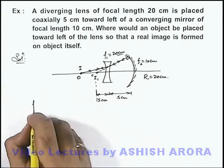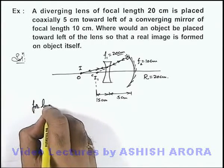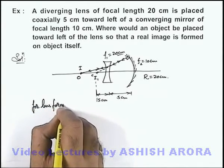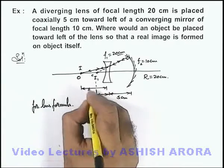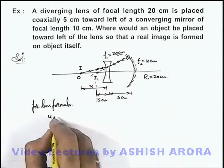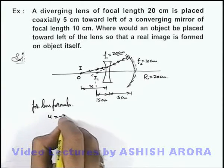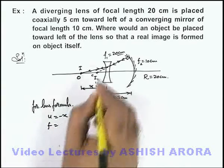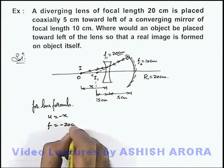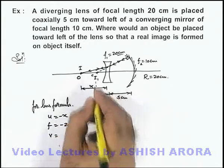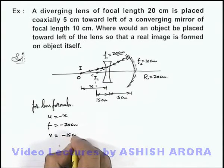So here for the lens formula, we can write if the object is located at a distance x from the lens, here we can use u is equal to minus x. The focal length of the lens as being a diverging lens here we can use it minus 20 centimeters, and the image distance we get is minus 15 centimeters.